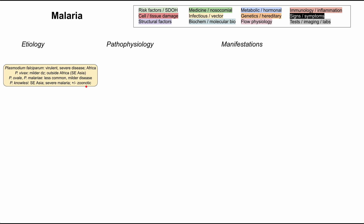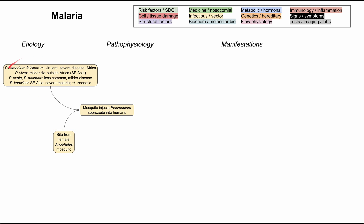These parasites alone are not enough to cause malaria — they also need to be transmitted and inserted into humans. This happens with a bite from a mosquito, specifically the female Anopheles mosquito. When a mosquito containing one of these Plasmodium parasites bites a human, it can inject Plasmodium sporozoites into the bloodstream. Sporozoite is just one of the forms of Plasmodium, and we'll talk about the other forms as we progress through the life cycle.